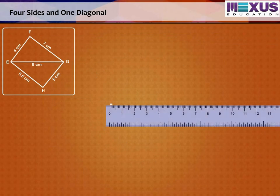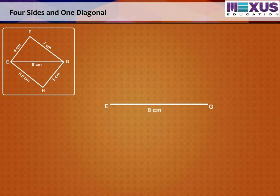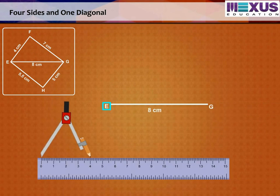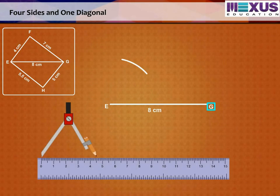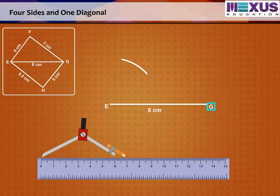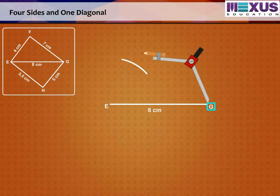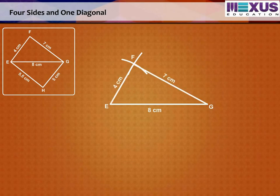Draw a line segment EG equal to 8 cm, with E as center and radius 4 cm, and G as center and radius 7 cm. Draw arcs to cut each other at F. Now join EF and GF.